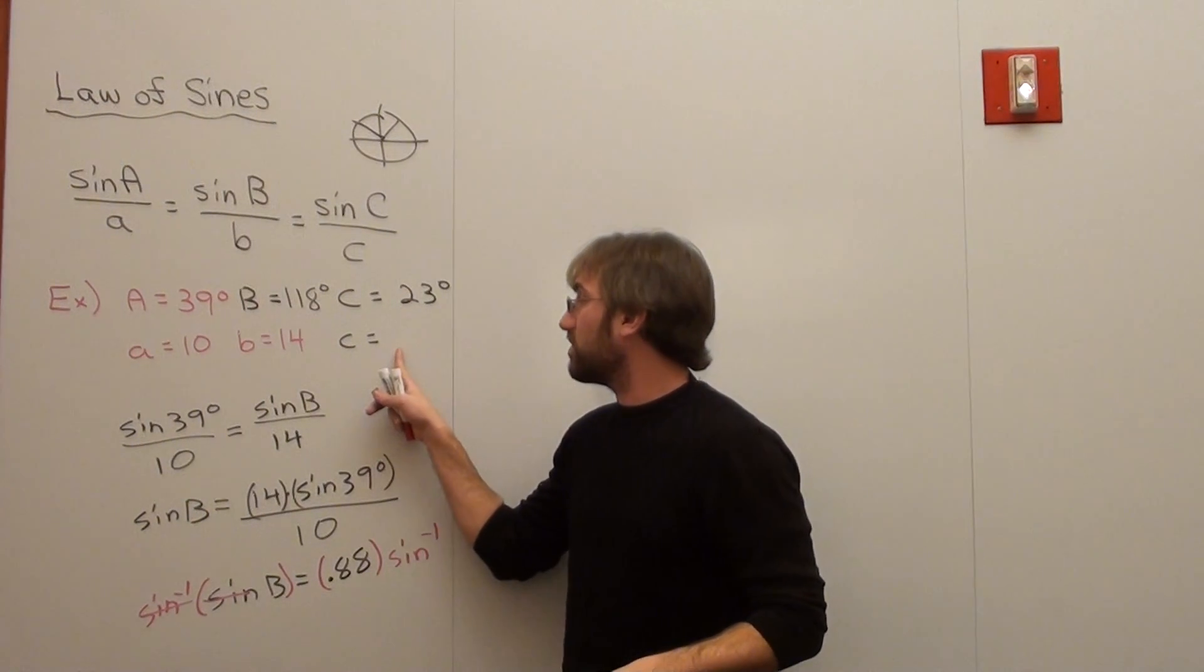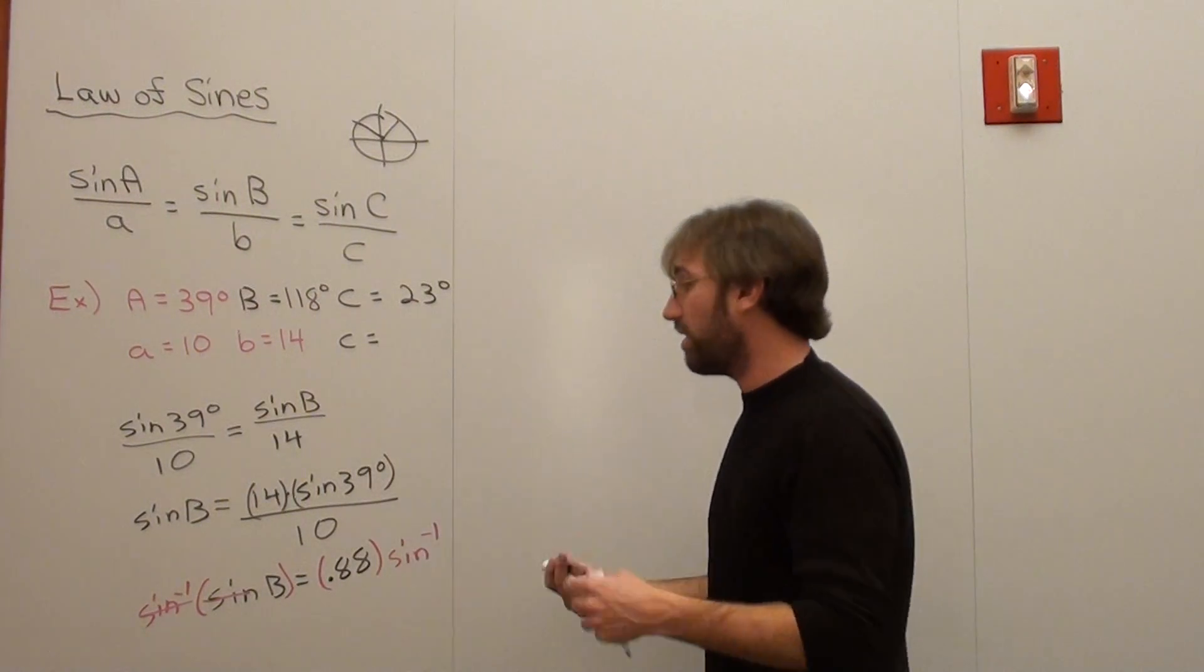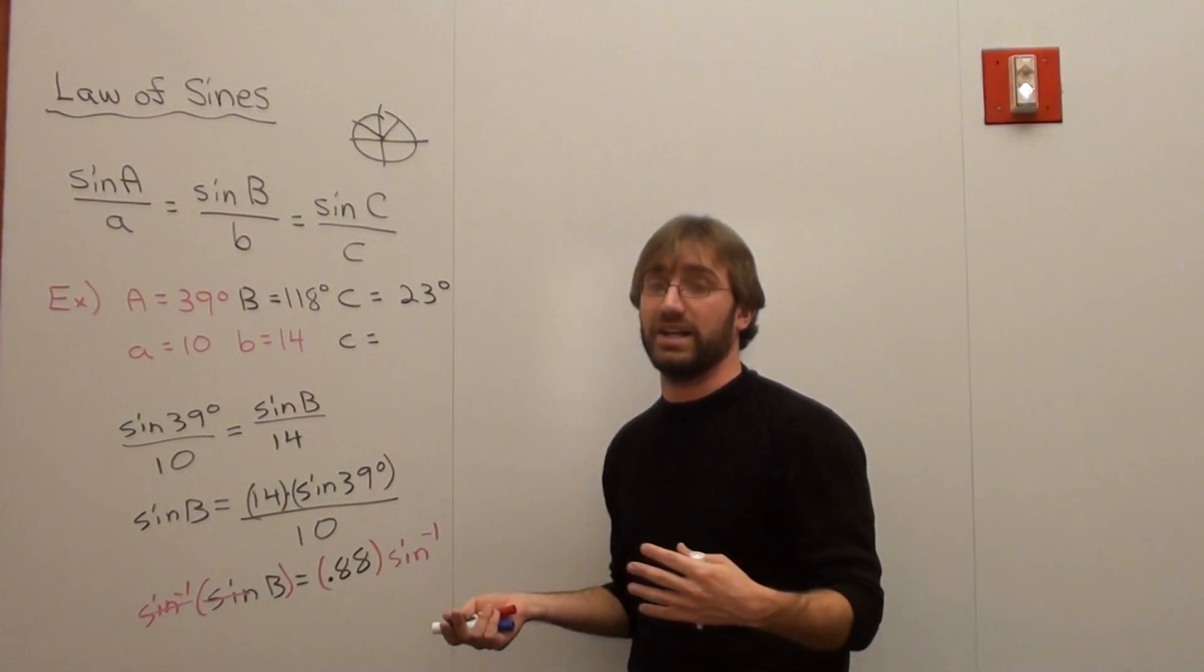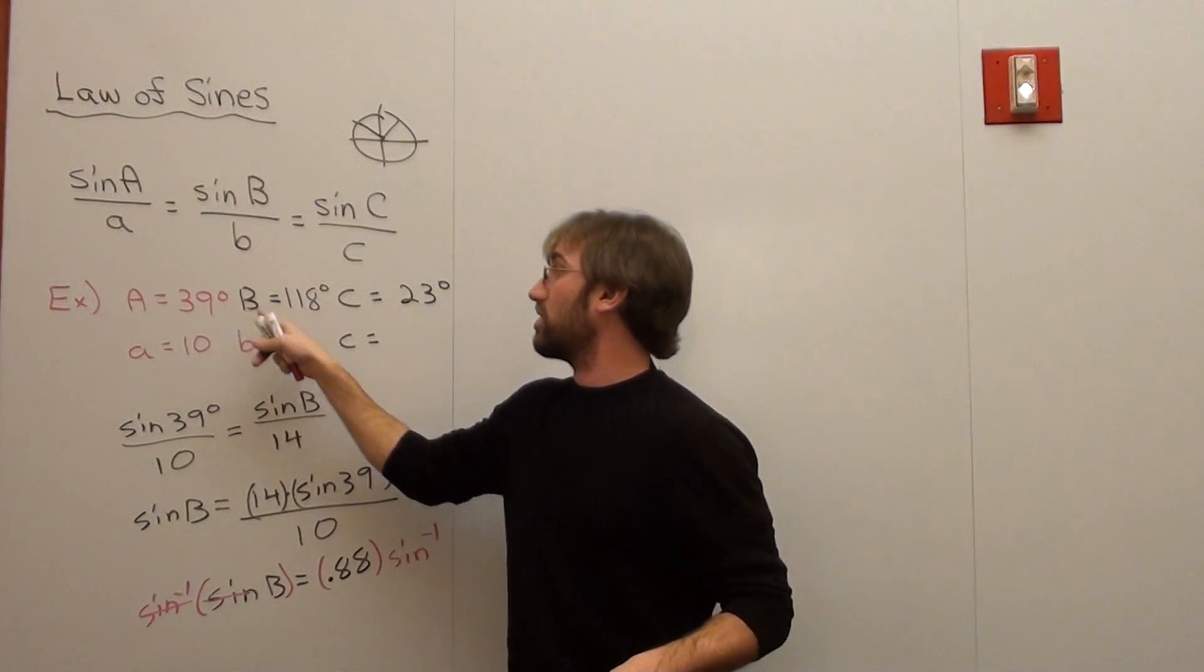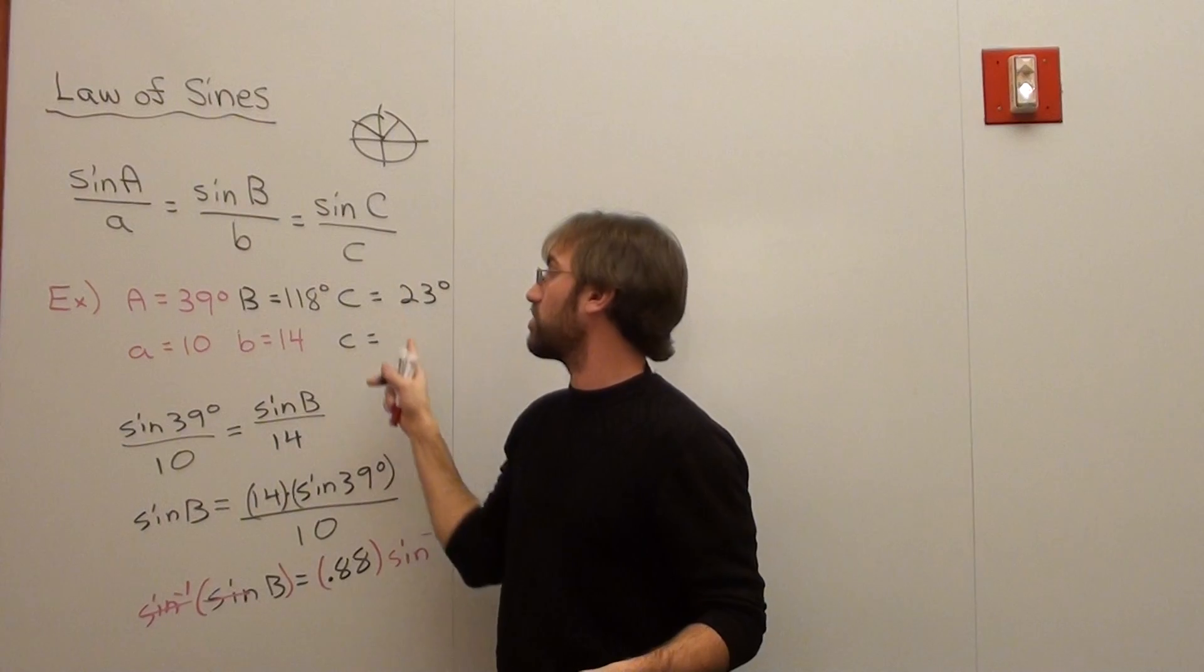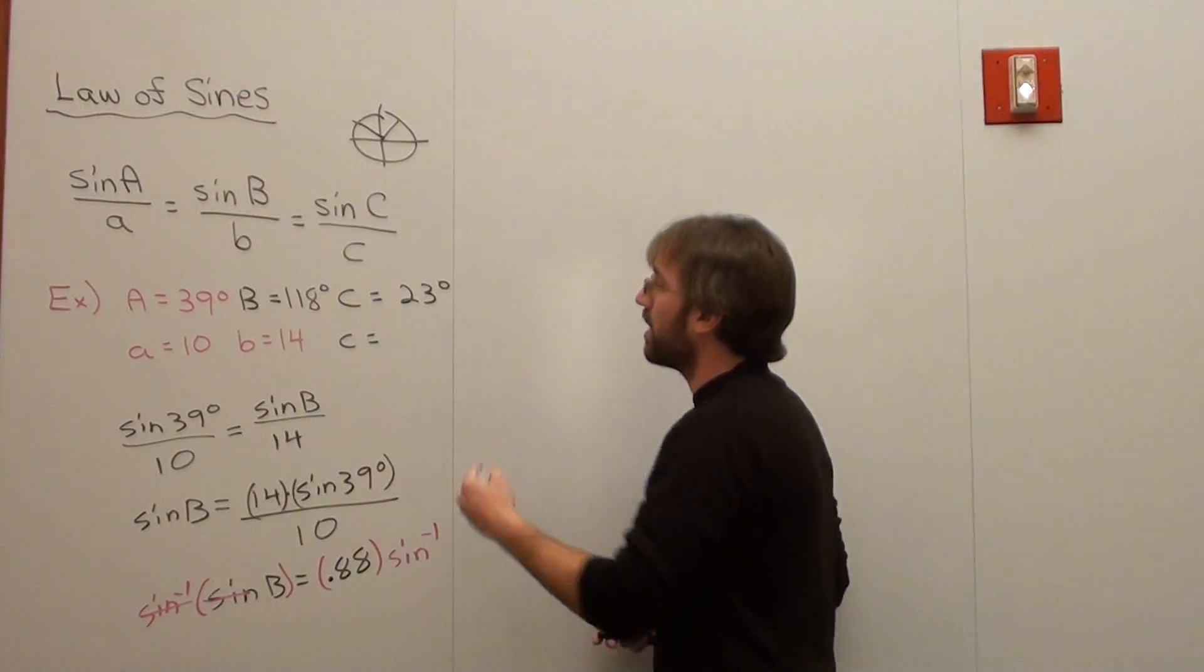All we really have to do now is figure out the C value. We can use the law of sines. I recommend using this ratio instead of the B ratio because this one was a rounded value, and of course the C ratio because I'm trying to figure out what C is.